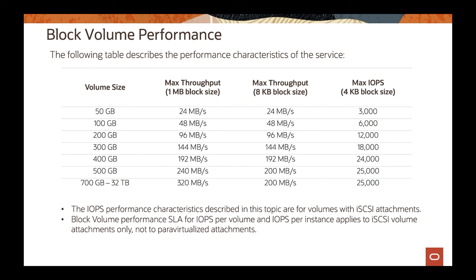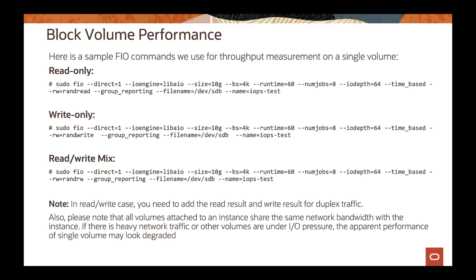There's a table that gives you a few numbers around throughput and IOPS depending on the block size tested, so you can see how much IOPS and throughput you can get on the block volume. There are also commands you can execute on your block volume to measure performance. Using the FIO command — which I also used against the NVMe device — you can do the same on block storage: measure read-only, write-only, or read-write operations and see how many IOPS you get on each device.